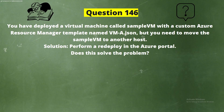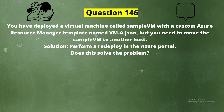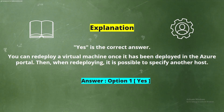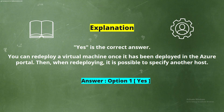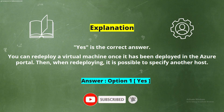Question 146. You have deployed a virtual machine called SampleVM with a custom Azure Resource Manager template named VMA-JASO, but you need to move SampleVM to another host. Solution: Perform a redeploy in the Azure Portal. Does this solve the problem? The correct answer is Yes. You can redeploy a virtual machine in the Azure Portal, and when redeploying it is possible to specify another host.